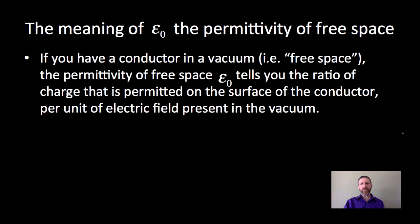Well, free space just means a vacuum. In fact, epsilon-naught is often called the permittivity of a vacuum. If you have a conductor in a vacuum, i.e. free space, the permittivity of free space epsilon-naught tells you the ratio of charge that is permitted on the surface of the conductor per unit of electric field present in the vacuum.